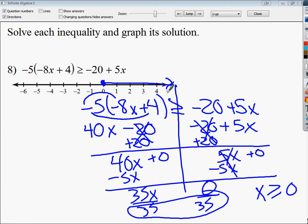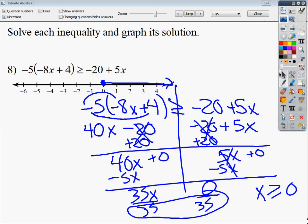If you eliminate your variable term and you get a true statement, then it's all real numbers, and you want to draw the whole thing to show that any number you plug in works. If you eliminate your variable term and it's not true, it tells you some lie, you just put no solution because nothing you do can make it work. I hope this helps and makes that a little bit easier to grasp.